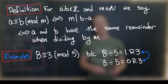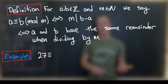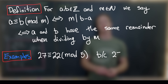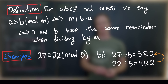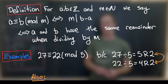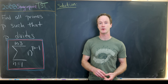Similarly, 17 is congruent to 7 mod 10 for the same reason. Or you could say 27 is congruent to 22 modulo 5, because when you divide 27 by 5 you get a remainder of 2, and when you divide 22 by 5 you also get a remainder of 2. They're both congruent to 2 mod 5.